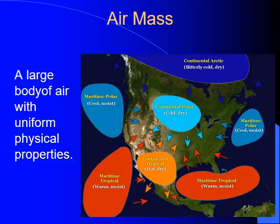This presentation is on air masses and fronts. An air mass is a large body of air with uniform physical properties. When air sits over a particular part of the earth for a period of time, it takes on the characteristics of the land or water below it. Air masses that form over water are called maritime air masses, and they're moist.